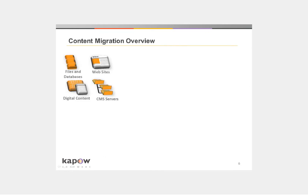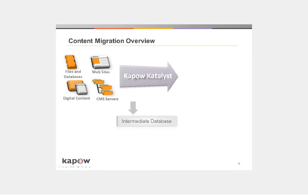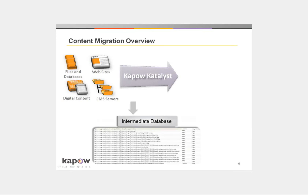This is an overview of Kapow's content migration process. The content is extracted directly from the website or other sources with Kapow robots and stored into an intermediate database, where the content can be formatted, categorized, and transformed to meet the taxonomy of the target CMS.